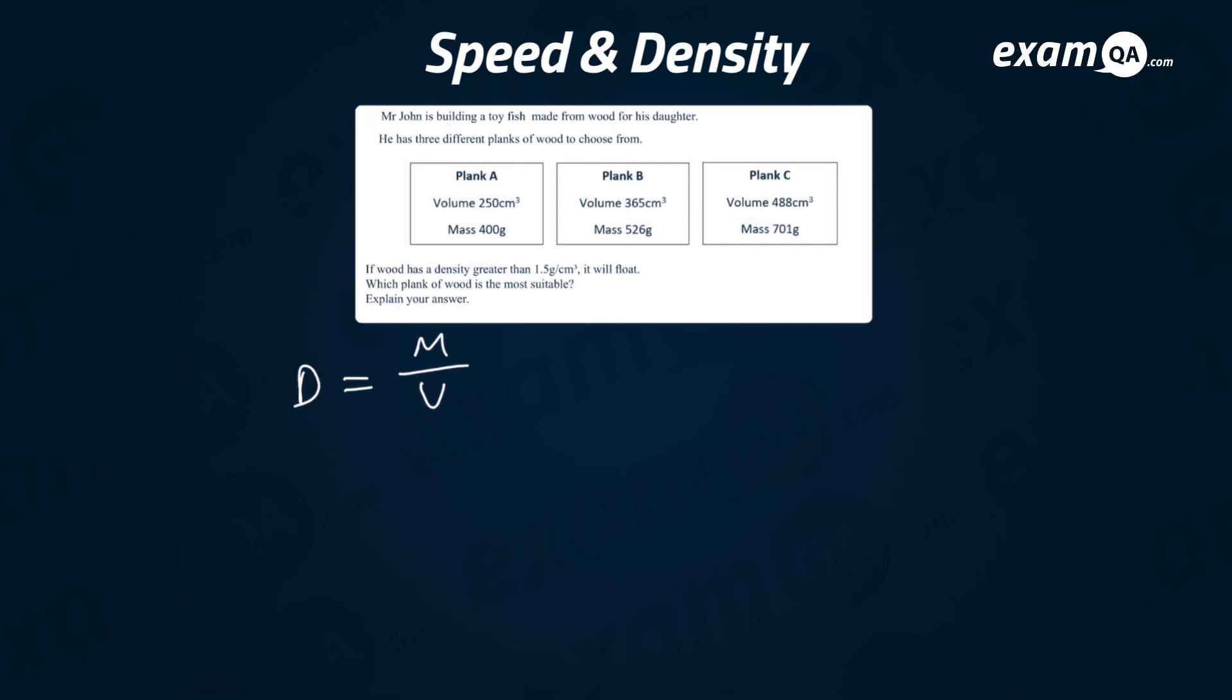We will just work out what the density is. Plank A: mass is 400, volume is 250, put it in your calculator, you get 1.6 so this was good, A worked out fine, it's got a suitable density. Let's try B: mass over volume would be 526 over 365, put that in your calculator and you will get 1.44, of course that is less than 1.5 so that's not going to work. Finally we'll do C: density equals mass over volume, C will be 701 divided by 488, and if you put that in your calculator that is also less than 1.5, so basically A is the most suitable and there we have it.